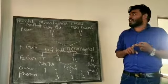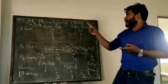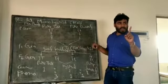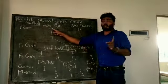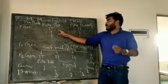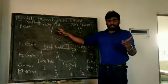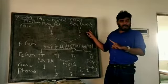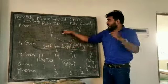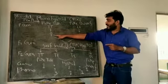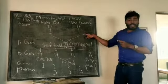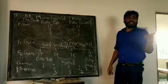In the P generation, the cross is TT (pure tall) crossed with tt (pure dwarf). For F1, one allele is T and the other is t, giving us Tt.